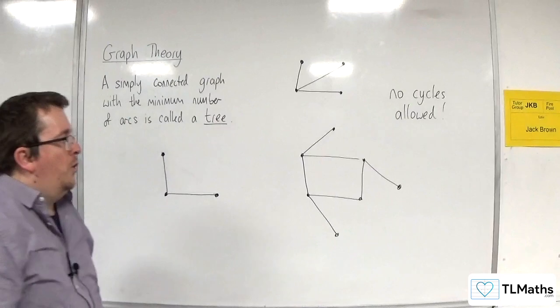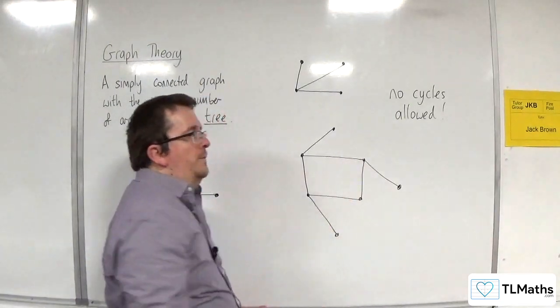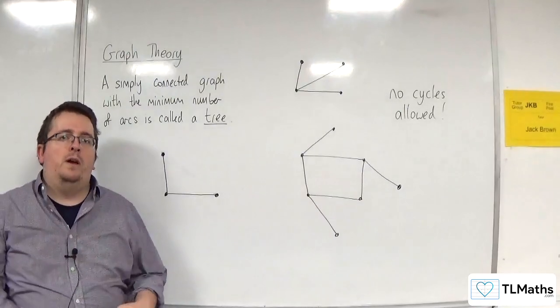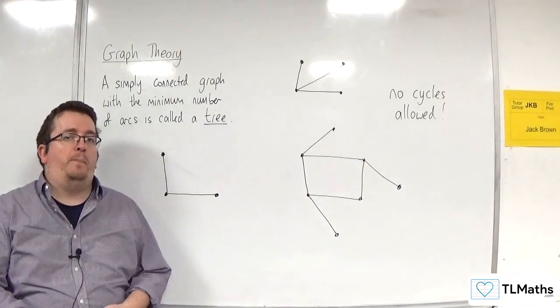So we cannot have a cycle, and that is something that we're going to need to look out for when we move on to Prim's and Kruskal's algorithms that are looking for minimum spanning trees.